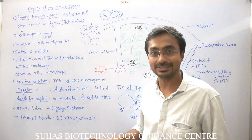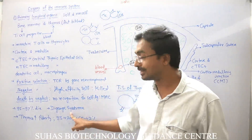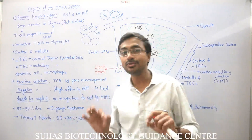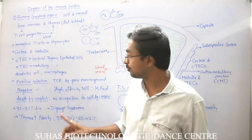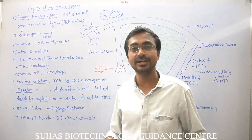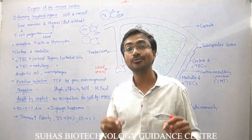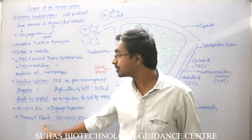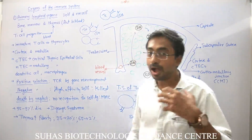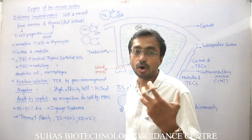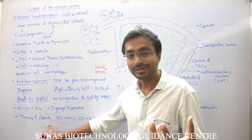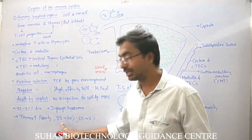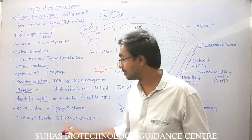There is a syndrome called DiGeorge syndrome in which the body doesn't develop a thymus. If the body won't develop thymus, definitely the immune ability is very weak. Also with age, the ability of thymus will keep on decreasing — at puberty thymus shows its maximum activity.